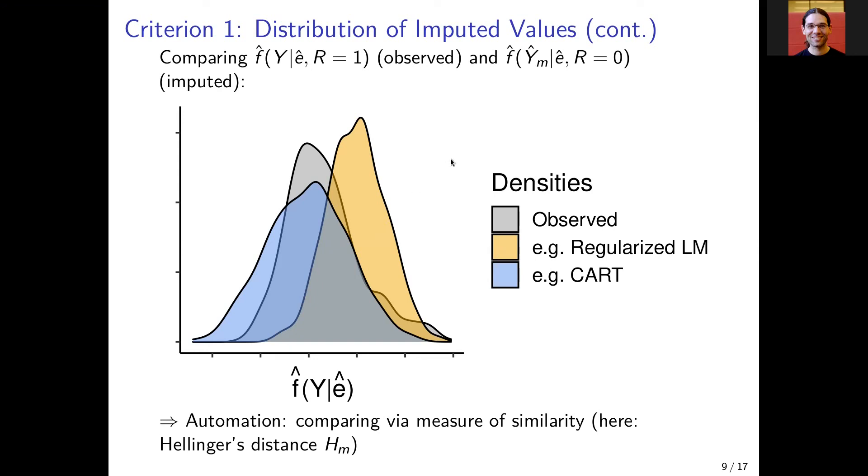Here, for example, we have more overlap for CART than for the regularized linear model. Therefore, we would use CART to impute this variable here.